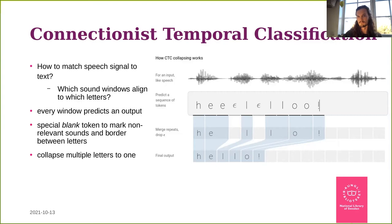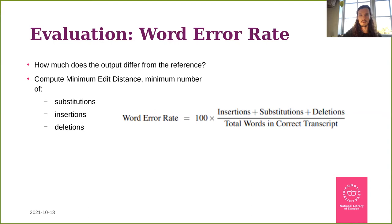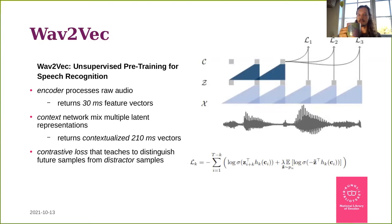For evaluation we generally use Word Error Rate — given the reference string, how many insertions, substitutions, and deletions are needed to match the predicted string to it. If you predict phonemes instead of words, you use Phoneme Error Rate, or PER, rather than WER.